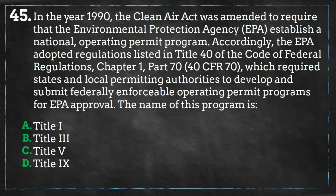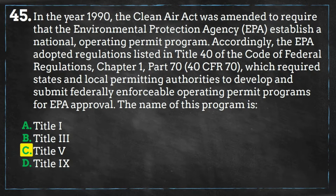There were six main parts of these amendments, which are called titles, and the amendments for operating permits were added in Title V, which is answer C. Today, Title V operating permits are issued to all large sources of air pollution, which are called major sources, to regulate the air emitting activities.